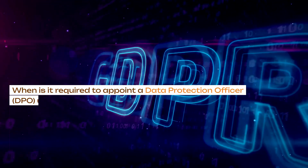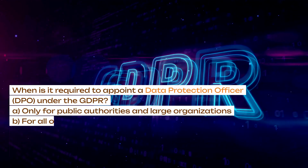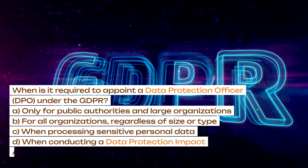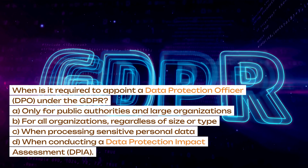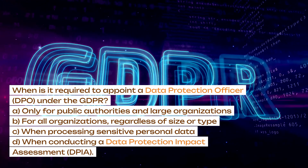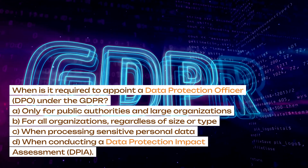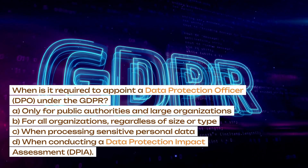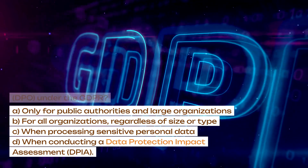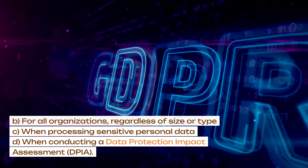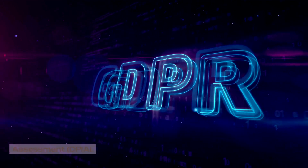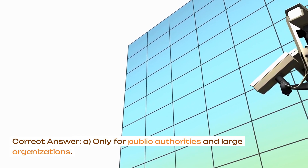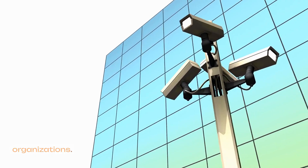When is it required to appoint a Data Protection Officer (DPO) under the GDPR? A. Only for public authorities and large organizations. B. For all organizations, regardless of size or type. C. When processing sensitive personal data. D. When conducting a Data Protection Impact Assessment (DPIA). Correct answer: A. Only for public authorities and large organizations.